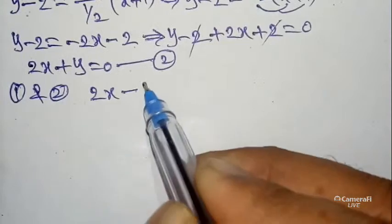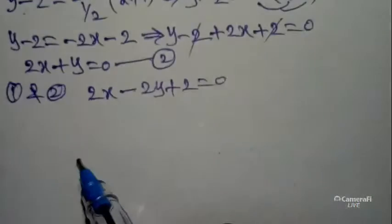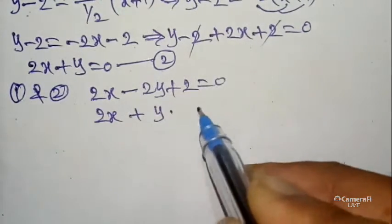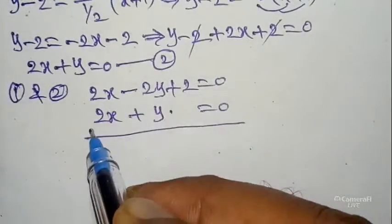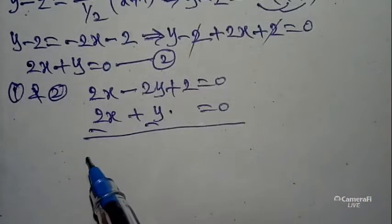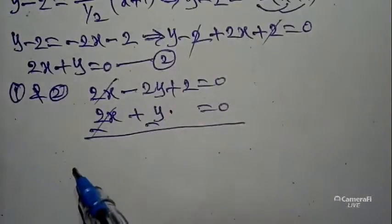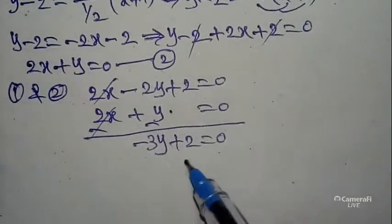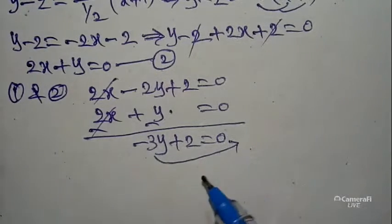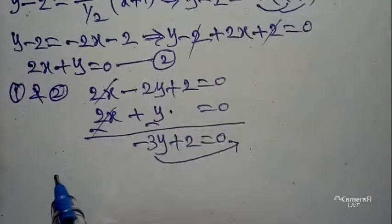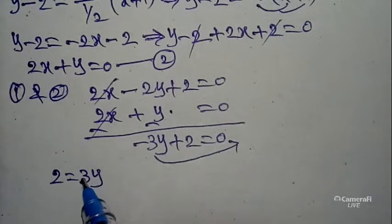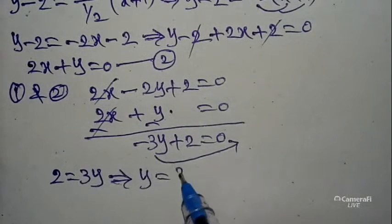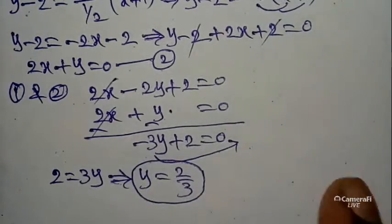Solving Equation 1 and Equation 2. Equation 1: 2x - 2y + 2 = 0. Equation 2: 2x + y = 0. Subtracting Equation 2 from Equation 1: (2x - 2x) + (-2y - y) + 2 = 0, giving -3y + 2 = 0. So 3y = 2, therefore y = 2/3.